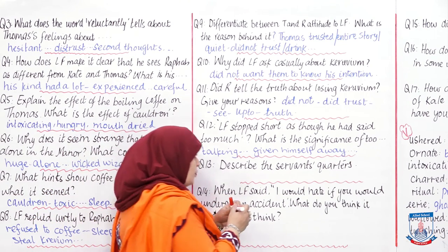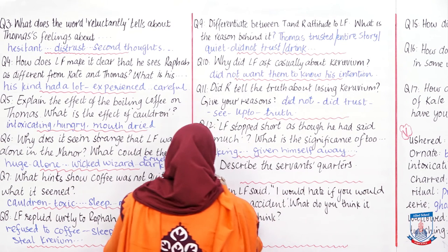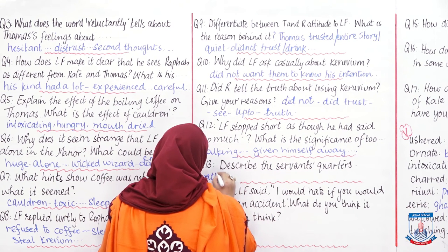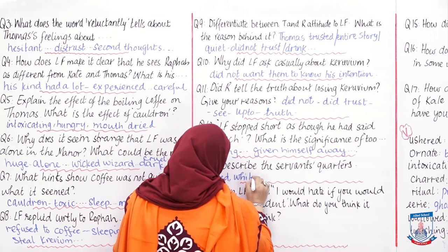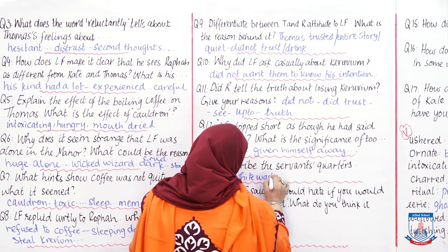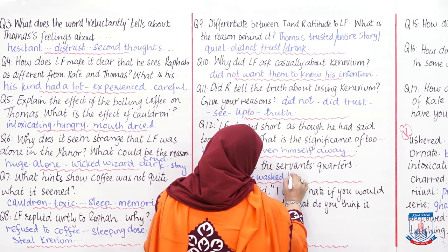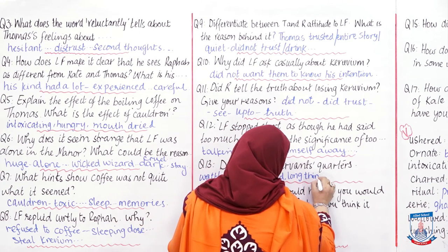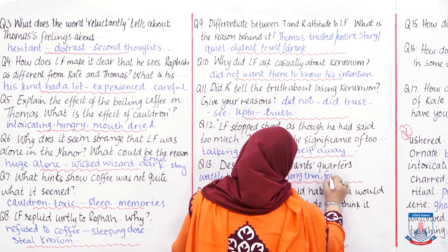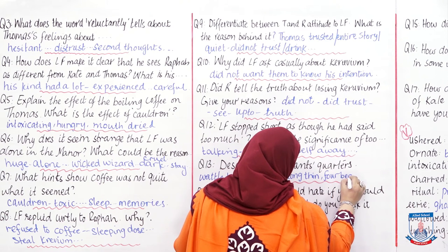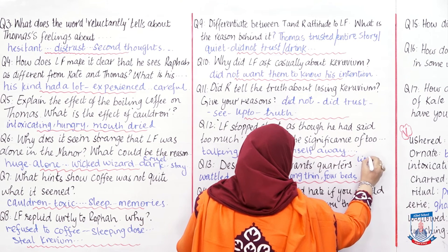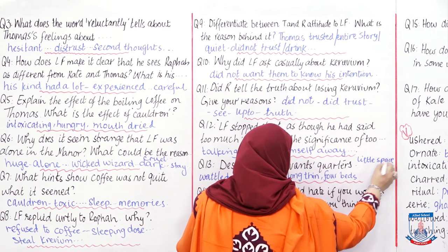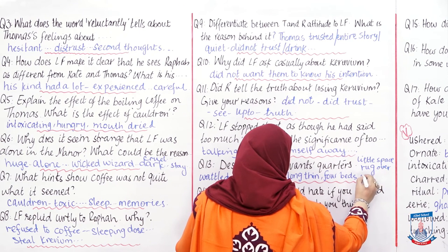Question: Describe the servant quarters. The servant quarters were whitewashed rooms — long and thin, with four beds and very little space to walk. The fire was burning and there was a rug over the wooden floor.